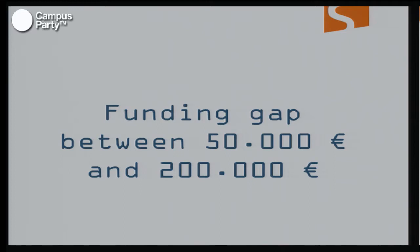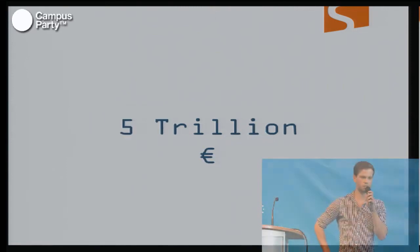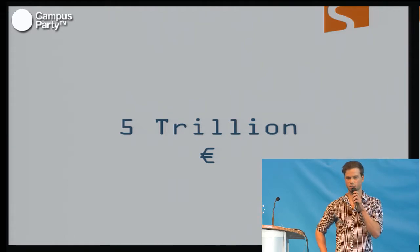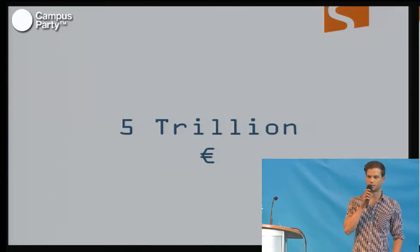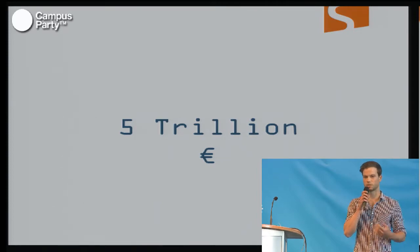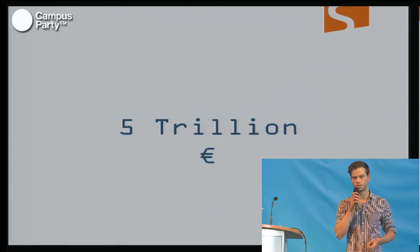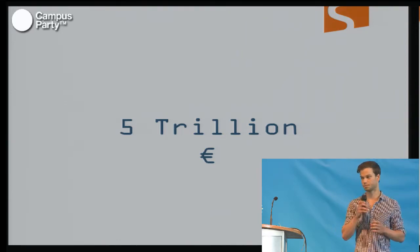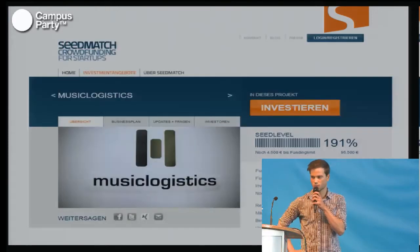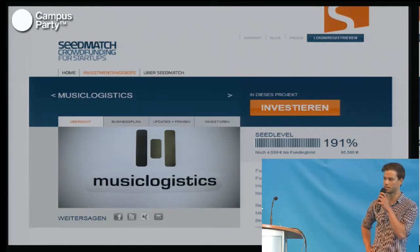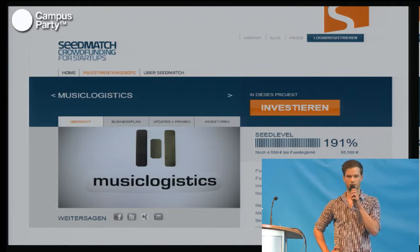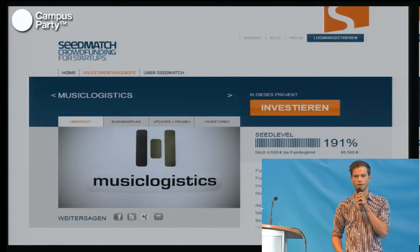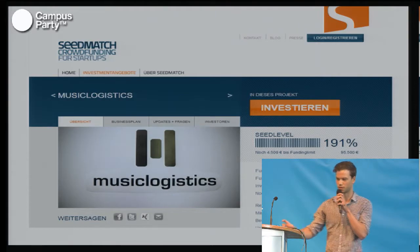In contrast to this funding gap, we have about five trillion euros just lying around on bank accounts earning a small rate of interest in Germany alone. So we thought: why don't we put this money to use? Why don't we finance innovation with it? Why don't we support entrepreneurship and give everyone the opportunity to invest in early-stage startups? This is what we created — and this is a screenshot of our website, Seedmatch. You can see one of our startups — it's called Music Logistics, which developed a music distribution network for the internet.